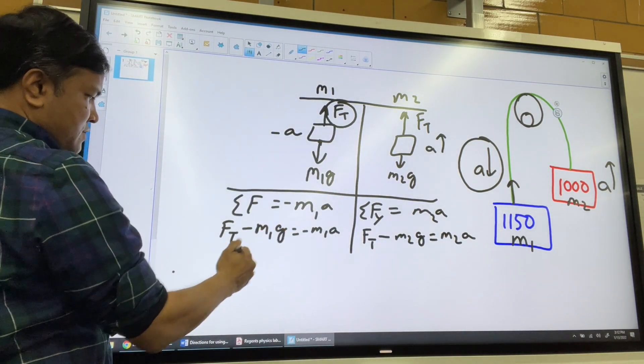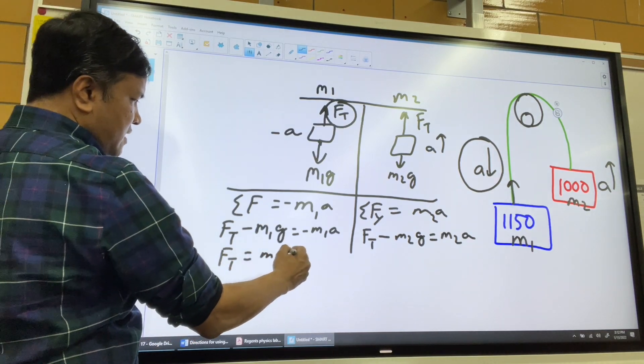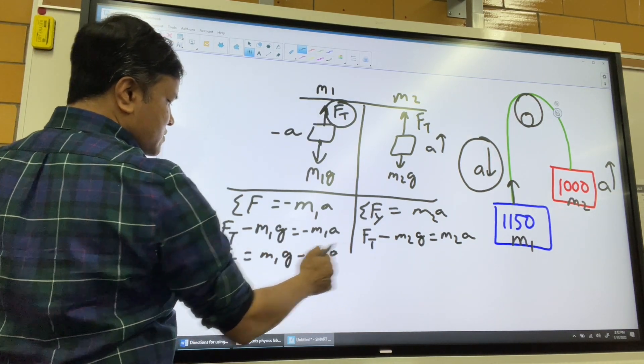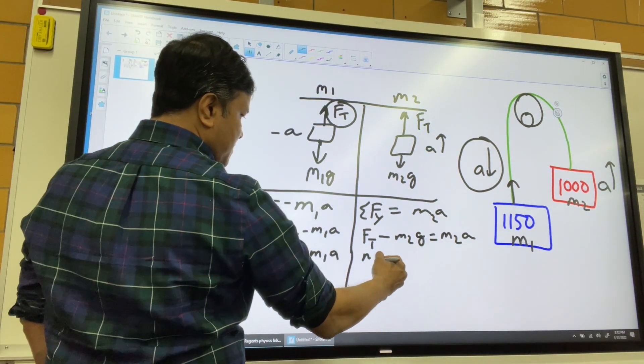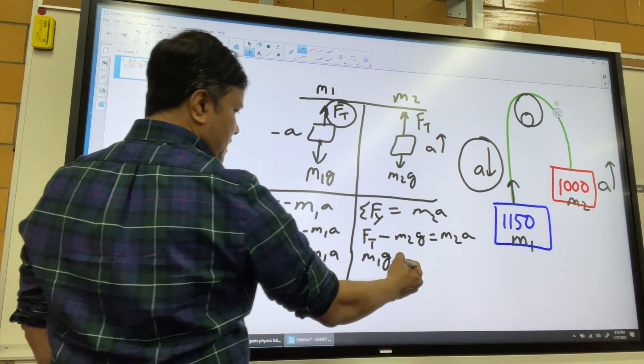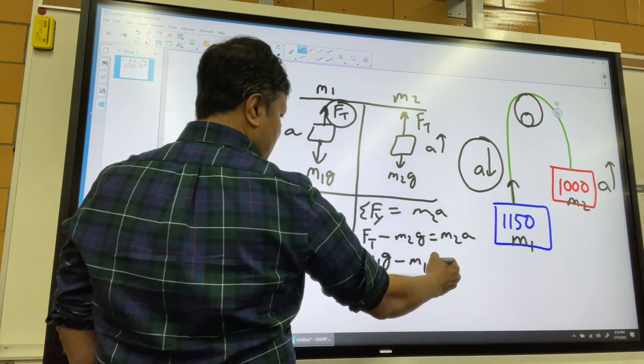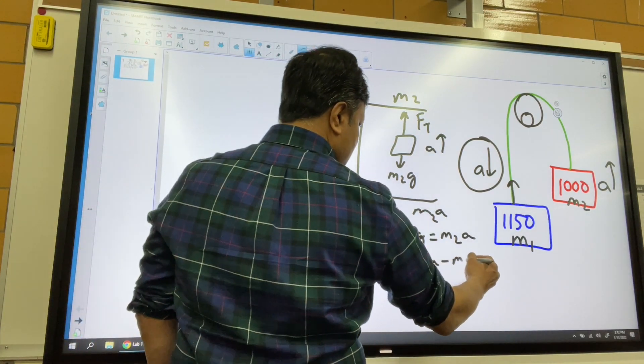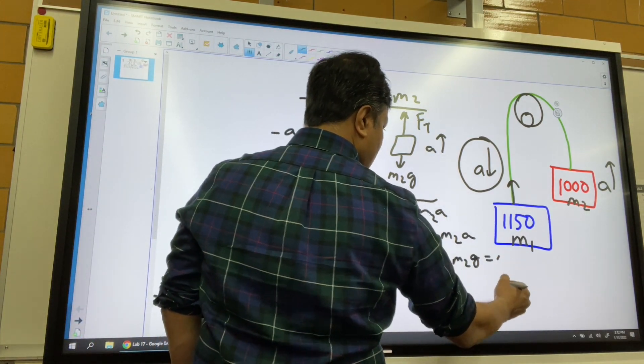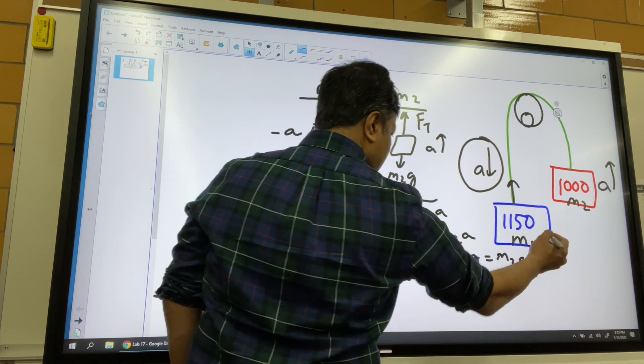Now, if I isolate FT, what do I get? M1G minus M1A. So I can replace this by that. So M1G minus M1A minus M2G is equal to M2A.